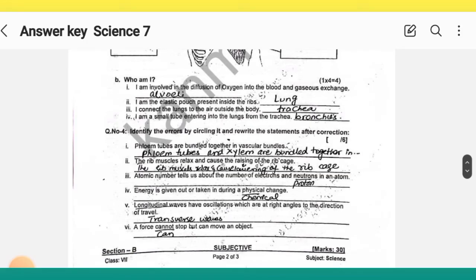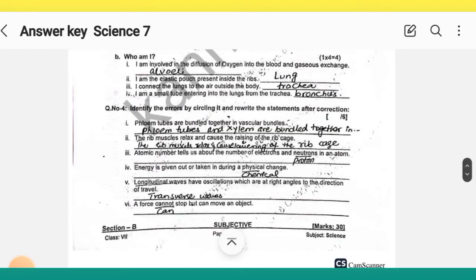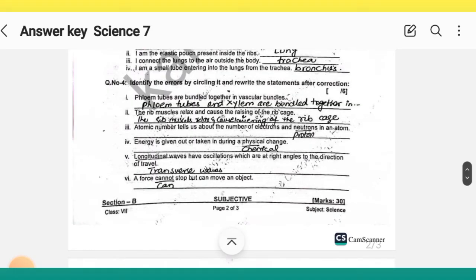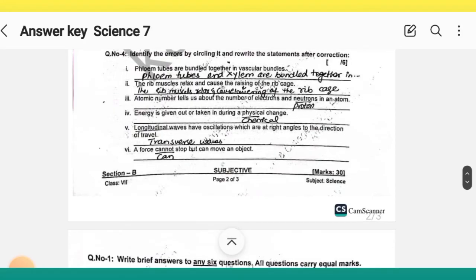The correct answers are given. You have been given six parts. In the second, the incorrect is 'raising' so we have changed it to 'lowering'. Third, a neutron is changed to proton. Fourth, physical is changed to chemical, longitudinal is changed to transverse waves, and in the sixth, 'force cannot stop' is changed to 'force can stop'.